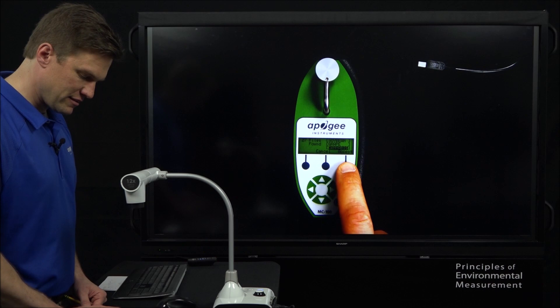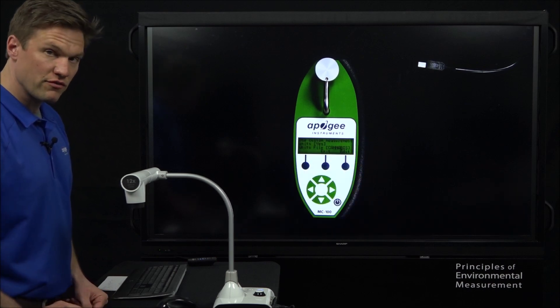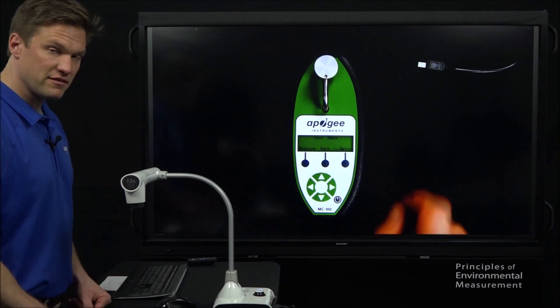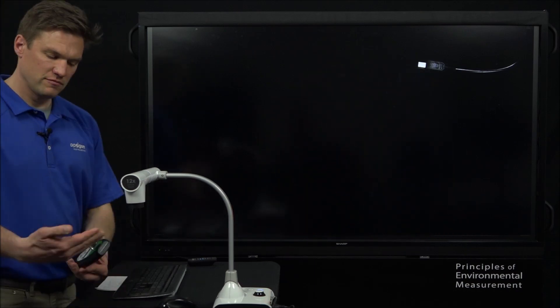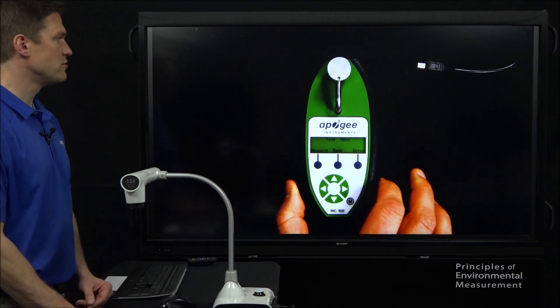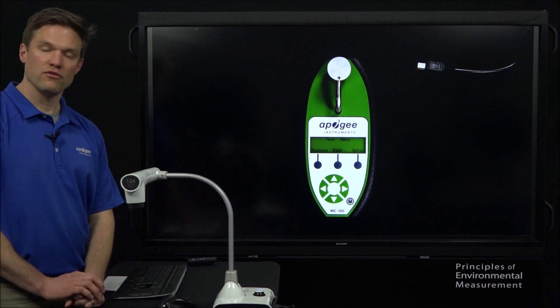So, excellent. Let's hit accept. Now we have cannabis coefficients selected. We can exit out of this screen and we're ready to take measurements. You can just stick the leaf in there, depress the arm and you'll be taking accurate absolute chlorophyll concentration measurements of cannabis. Or if you selected grape, you can get them for grape.